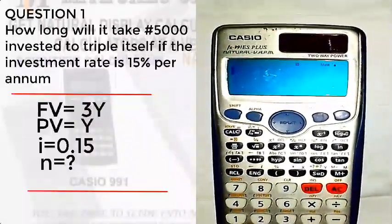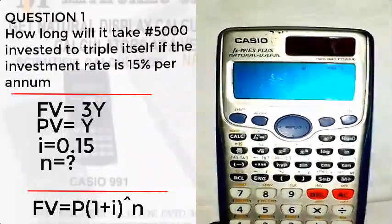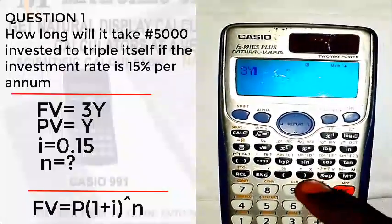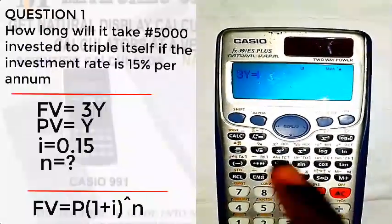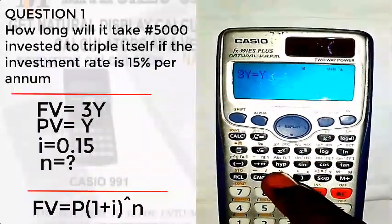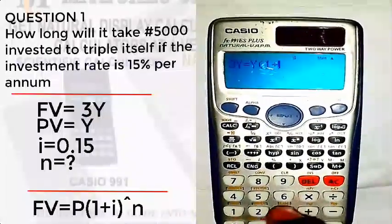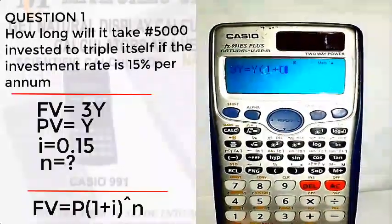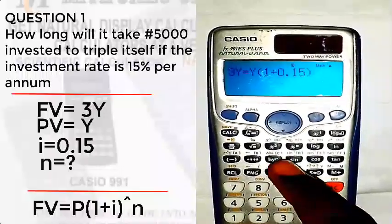So if the present value is Y, then the future value is going to be three times Y. Now let's do that. So we have 3 alpha, then use Y for that. Then alpha again, equal to the present value. Then alpha Y. You will open bracket, one plus the interest rate. We will have 15 percent, 0.15, close the bracket and raise the power.